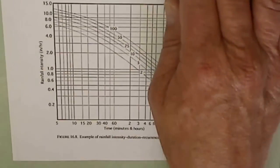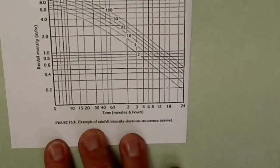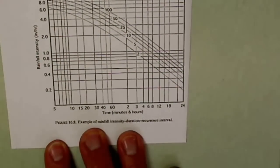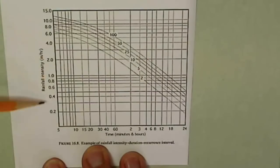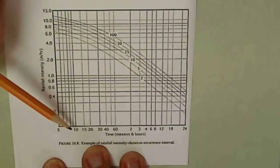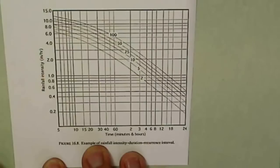So let's take a look at now what we might expect to find on a rainfall intensity duration recurrence interval. And we have a typical table right here. Let's take a look at the rainfall intensity in inches per hour along the side versus the time in minutes and hours.